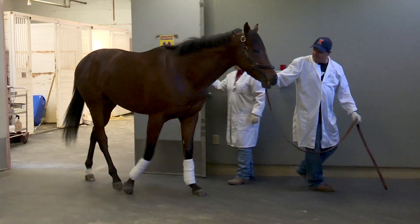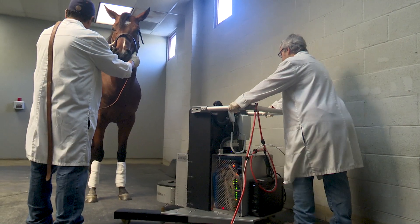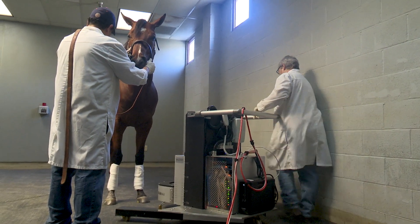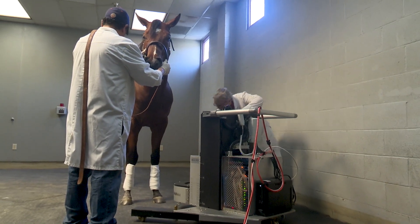So what PET scan does is it detects areas of bone turnover, which we know from a lot of research that these are areas that are pre-existing injuries, which are what we call micro-fractures.